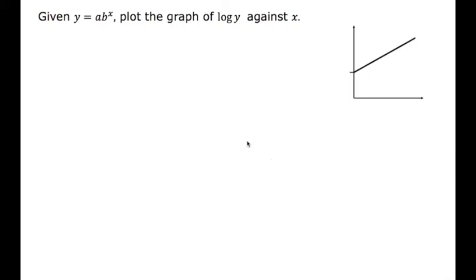In this instance, we're being told y equals ab to the x, plot the graph of log y against x. So this is a slightly different exponential curve that we're trying to make linear. So it would look something like that, an exponential, but we want to make it linear. So here we're going to make the y-axis log y and the x-axis we're going to leave as x.